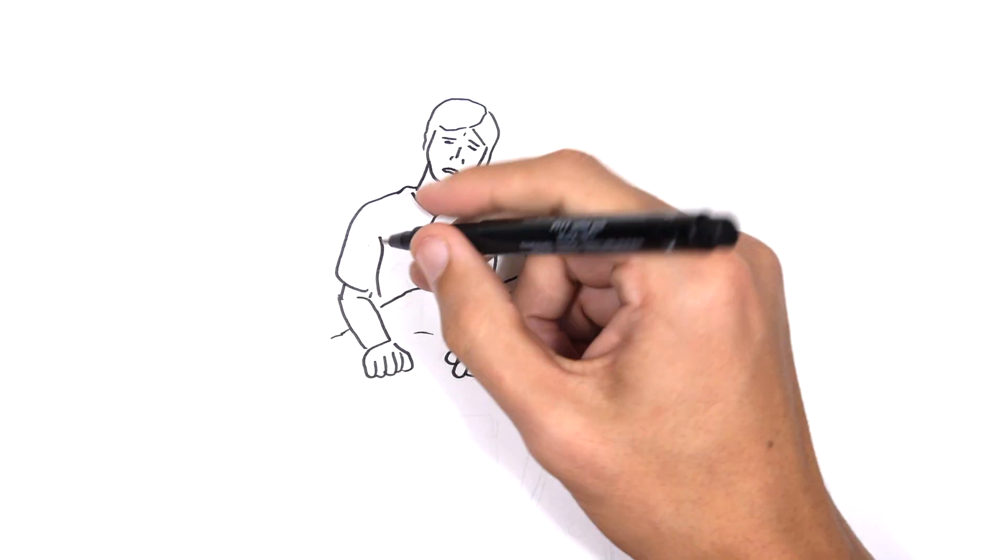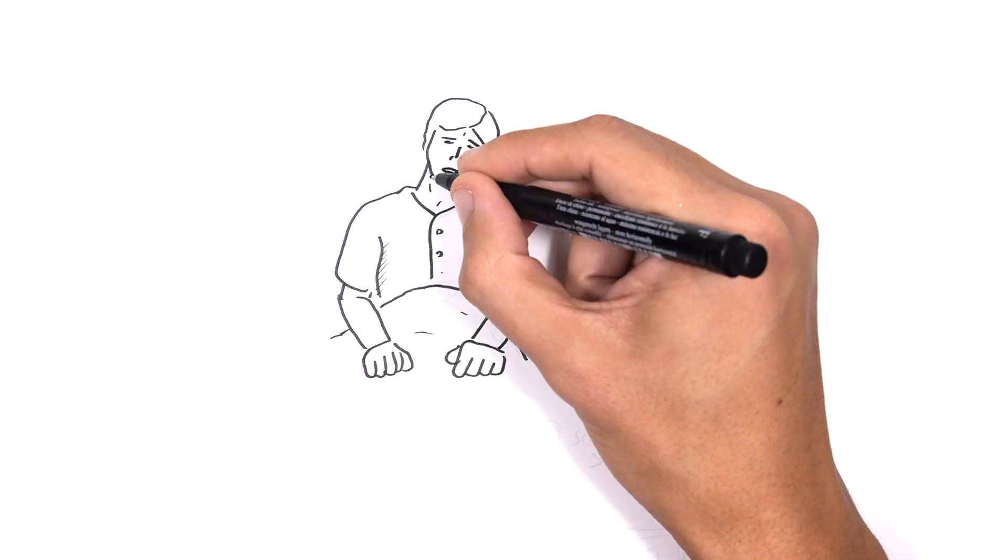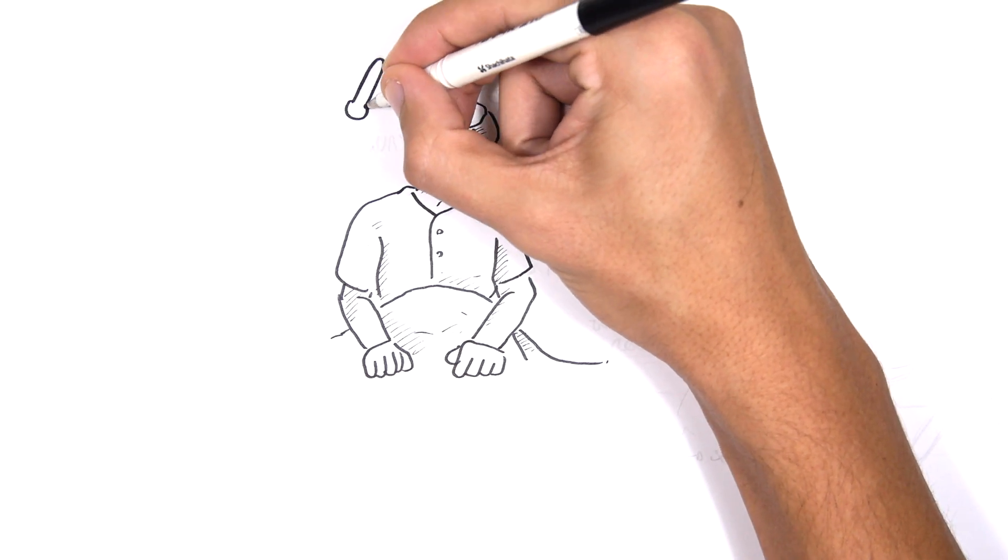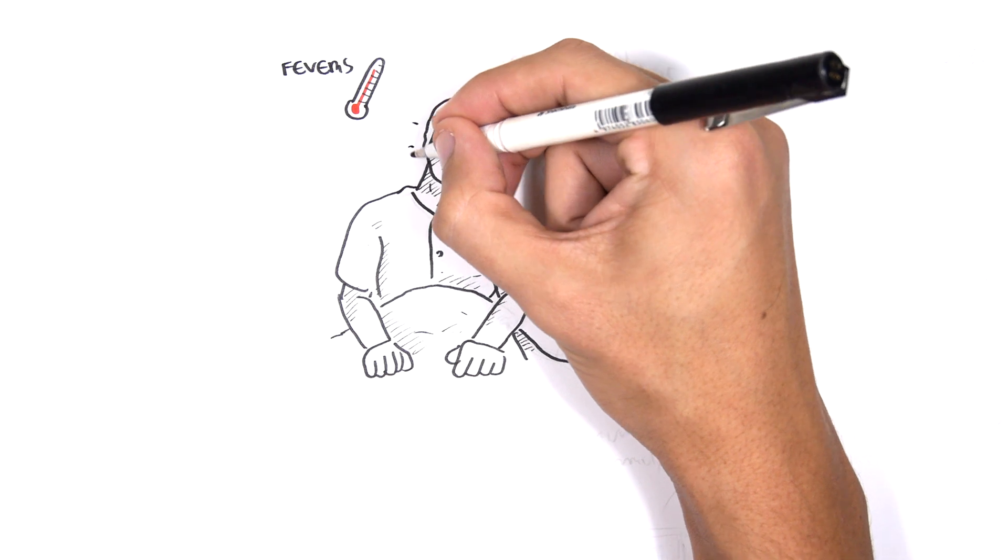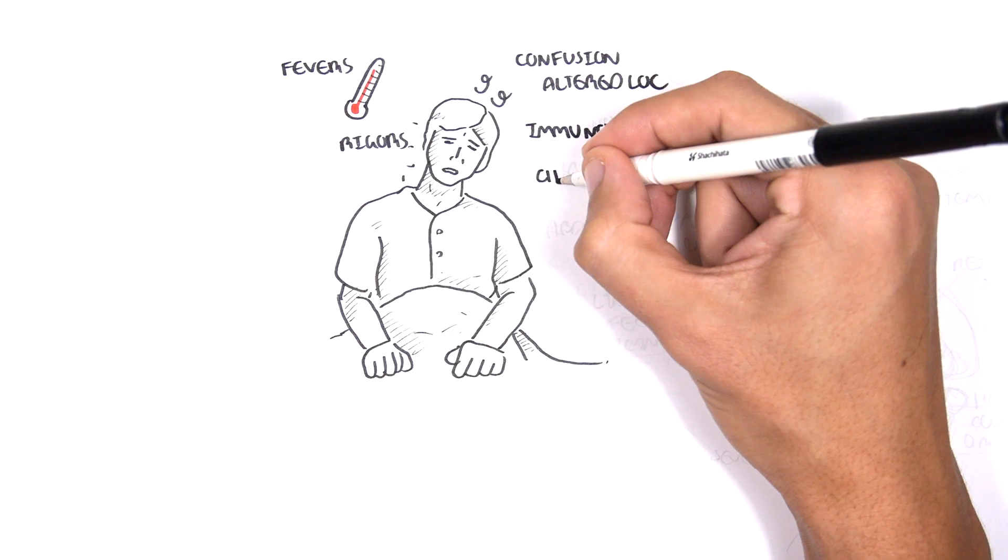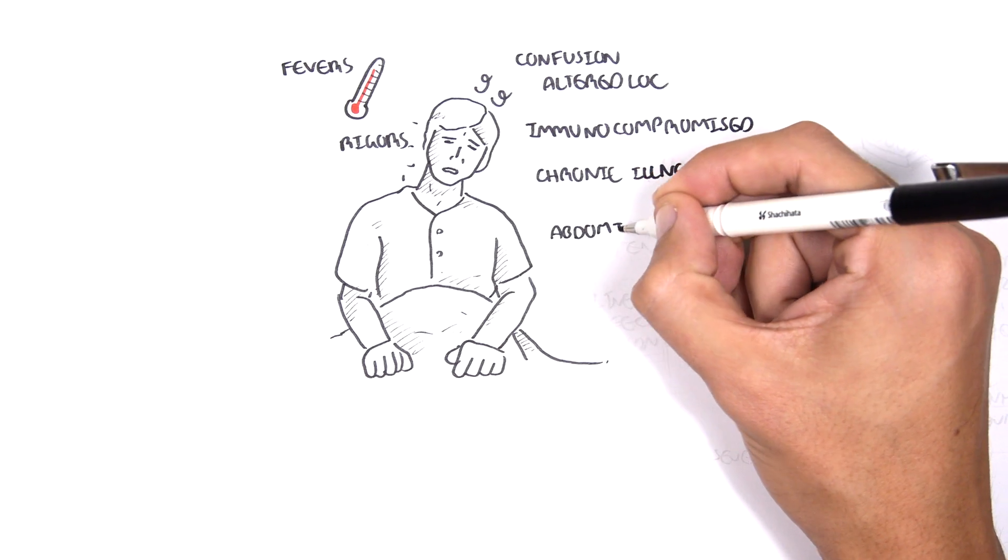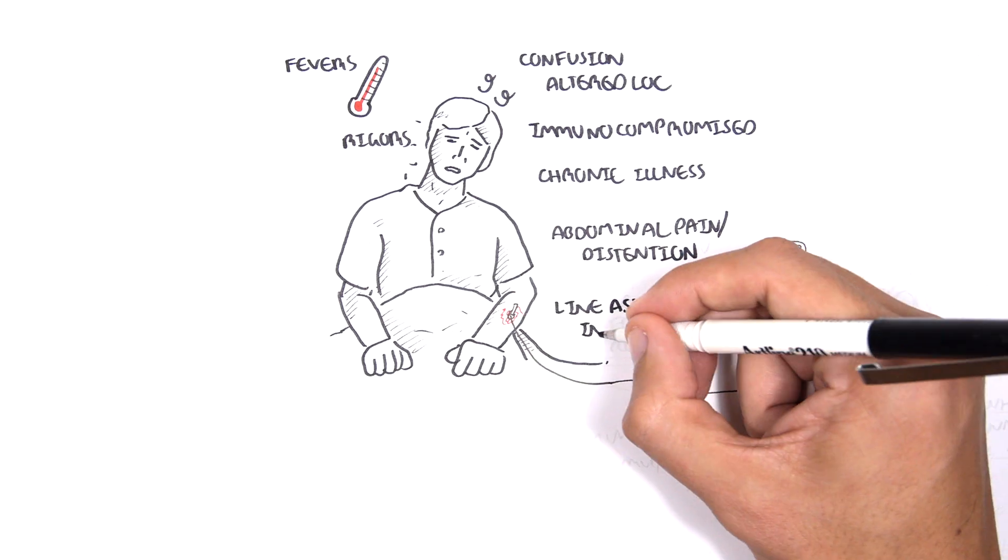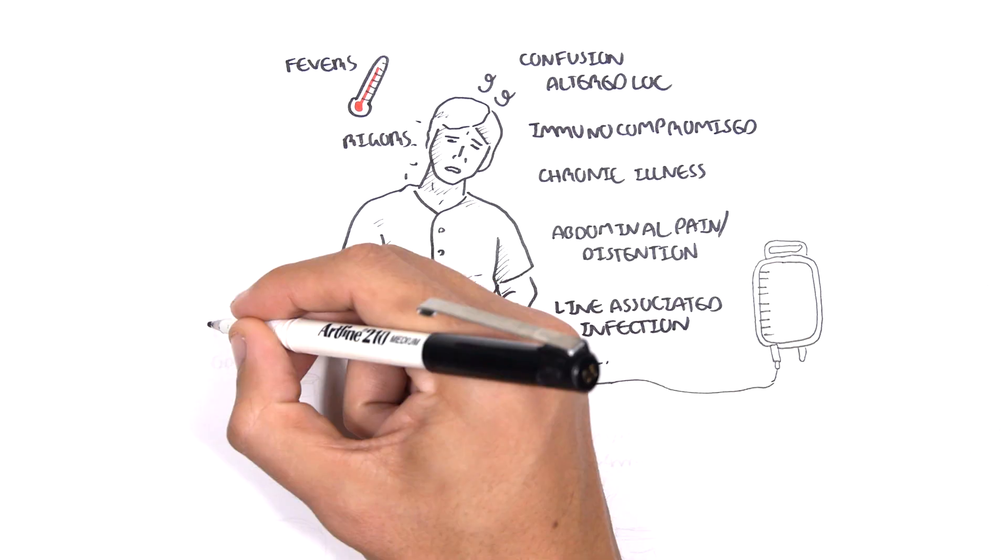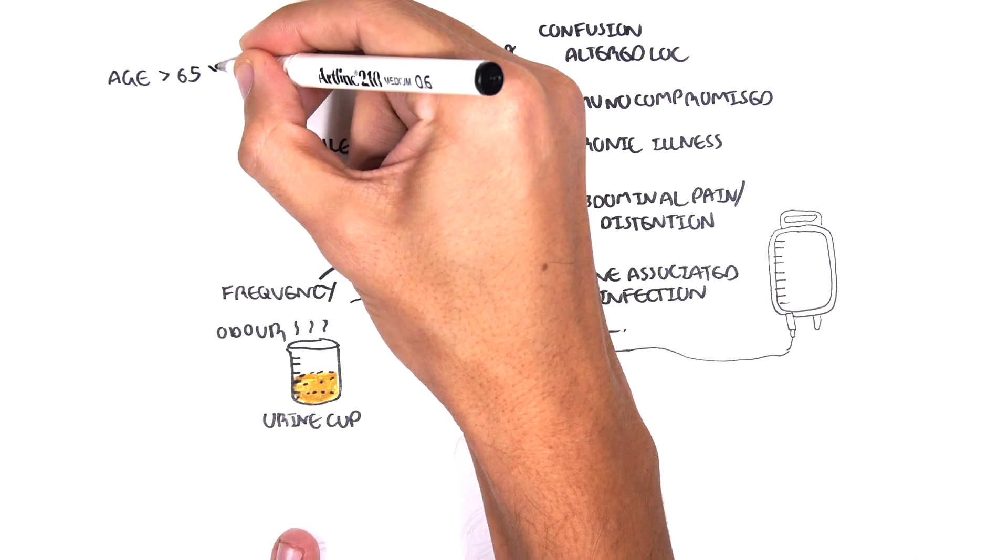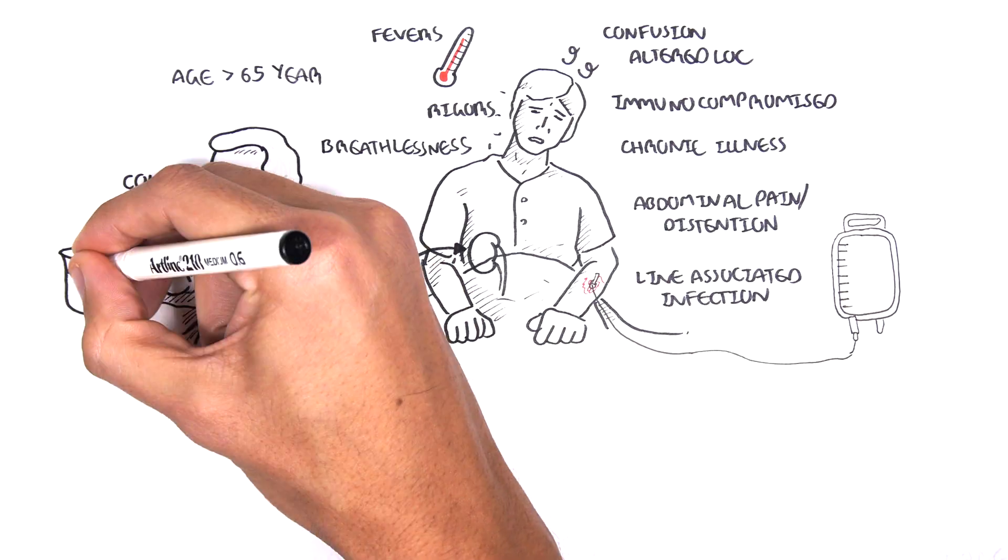It is important to detect when a person is becoming septic by firstly looking at their risk factors, but also some signs and symptoms which can be very general. These signs and symptoms include more than one of the following: fevers, rigors, confusion, altered loss of consciousness, immunocompromised, having a chronic illness, abdominal pain and distension, line associated infection, urine frequency, odorous urine, being of age greater than 65, having a cough and having a lot of sputum.